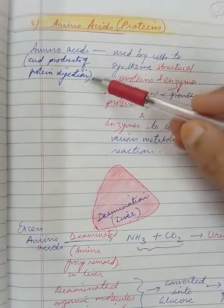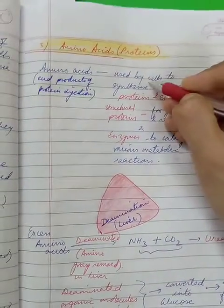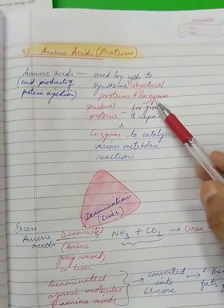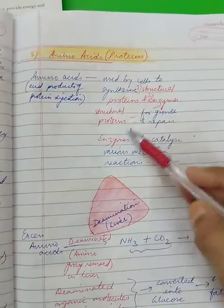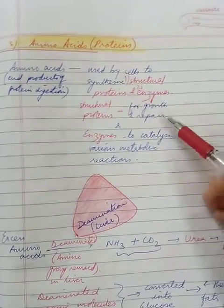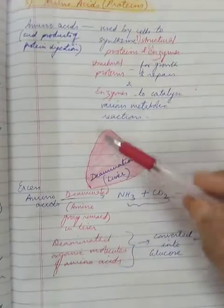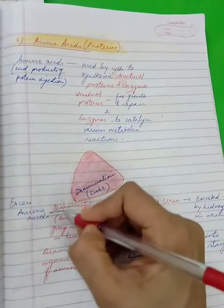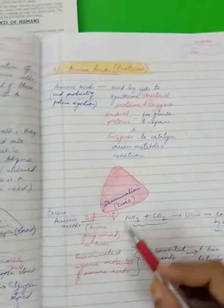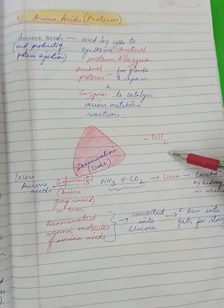Coming to assimilation of amino acids or the last products of protein digestion, amino acids they are used to synthesize two things. Number one, structural proteins and two, enzymes. We all know children that all enzymes they are proteinaceous. So amino acids they are used to make structural proteins and enzymes. These structural proteins they are used for purposes like growth and repair. Whereas the enzymes they are used to catalyze various metabolic reactions. Now in liver there is a very important process that takes place and we call this process as de-amination.